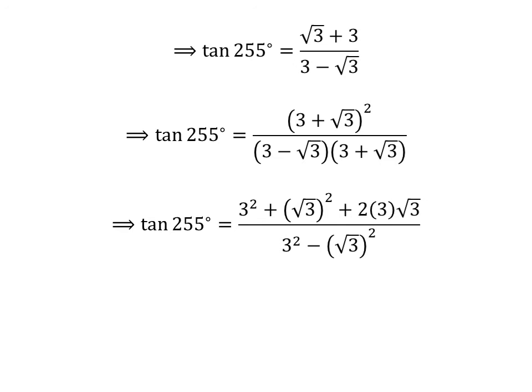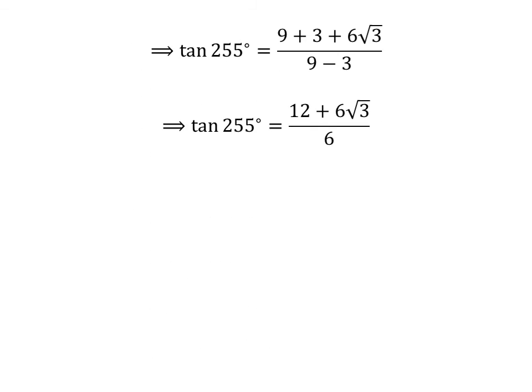Let us expand square of 3 plus square root of 3. In the numerator we have: square of 3 plus square of square root of 3 plus 2 times 3 times square root of 3. In the denominator, 3 minus square root of 3 times 3 plus square root of 3 is equal to square of 3 minus square of square root of 3. Square of 3 is 9 and square of square root of 3 is 3. So, tangent of 255 degrees is equal to 9 plus 3 plus 6 times square root of 3, upon 9 minus 3. Further simplification gives us tangent of 255 degrees is equal to 12 plus 6 times square root of 3, upon 6.